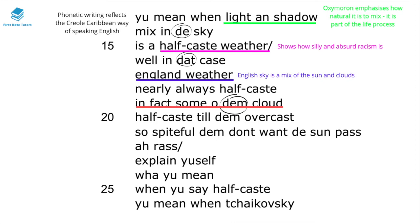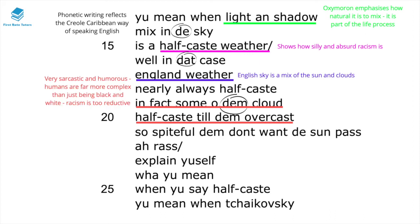In line 19, he states 'in fact, some of them cloud,' and in line 20, 'half-caste till them overcast.' This is a very sarcastic and humorous interpretation — Agard is trying to show that humans are far more complex than just being black and white. Racism is too reductive, and if we apply it to other areas of nature, we can see just how silly this very black-and-white thinking can be.